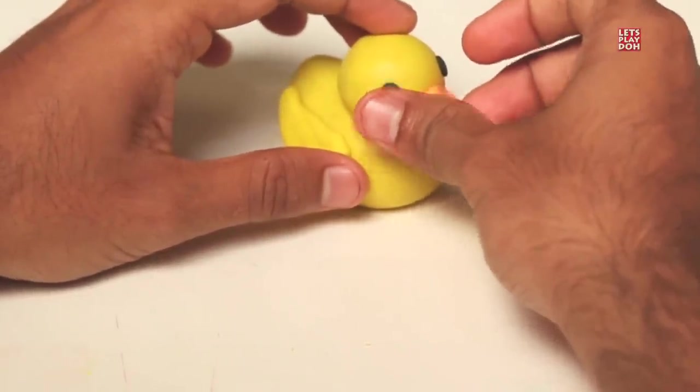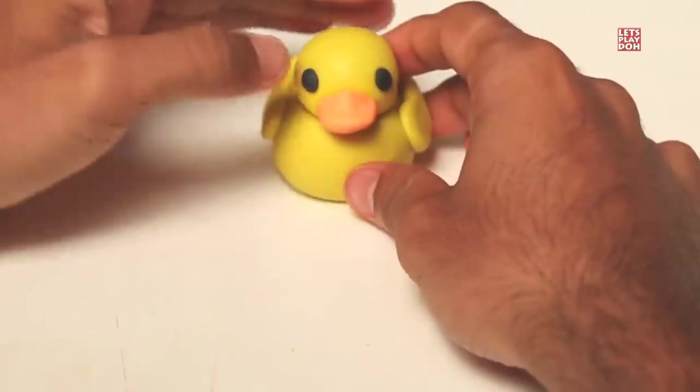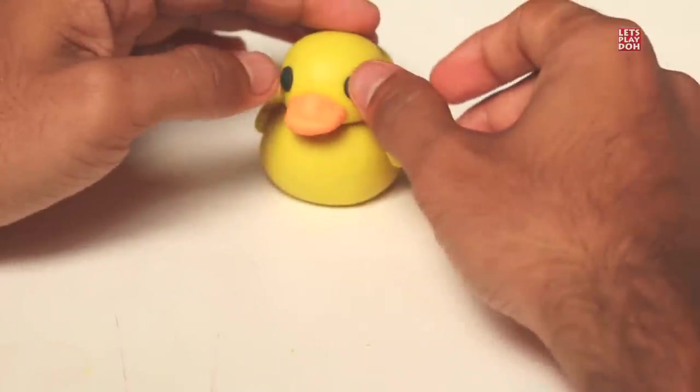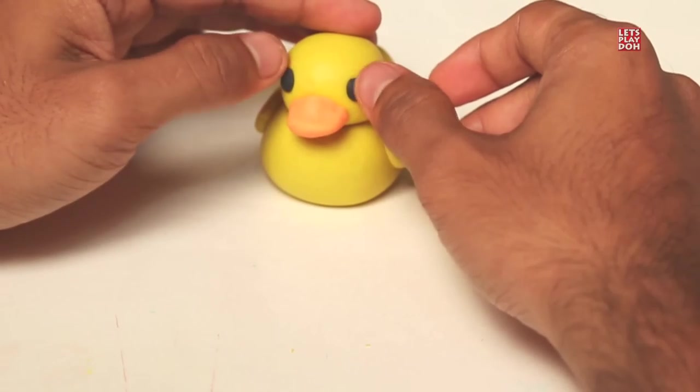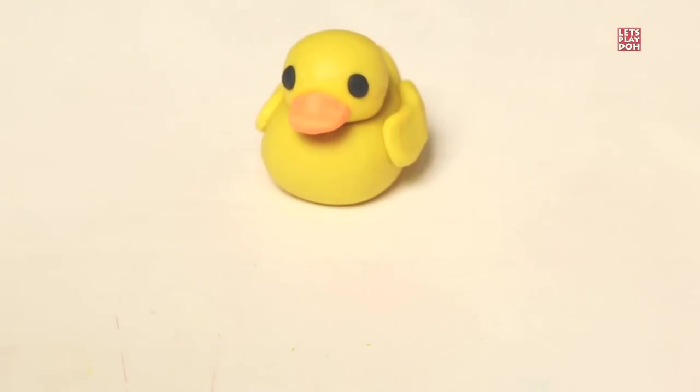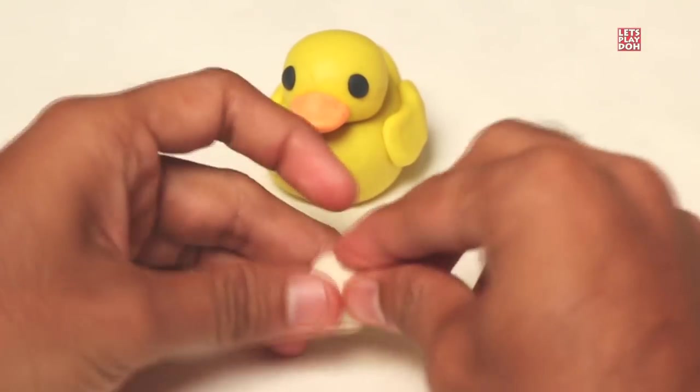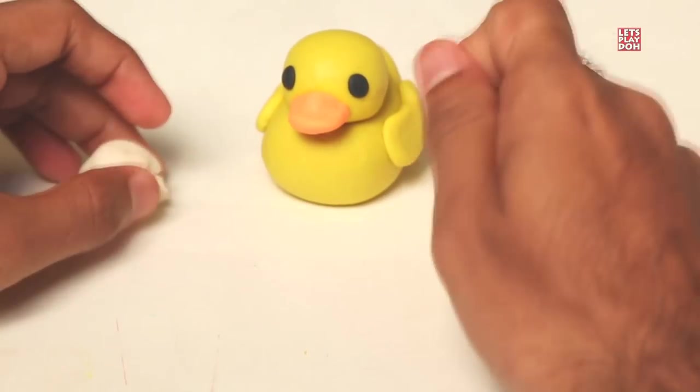And let's repeat that with another piece of black play-doh. A little bit up and to the left side now. Good. Make sure the eyes are about the same height and same size.